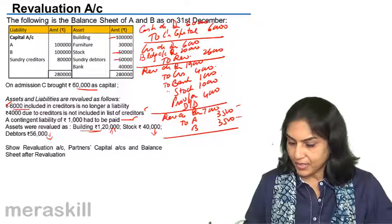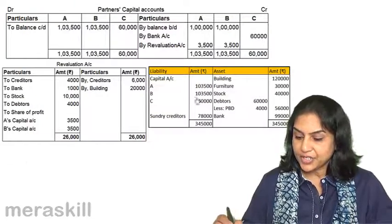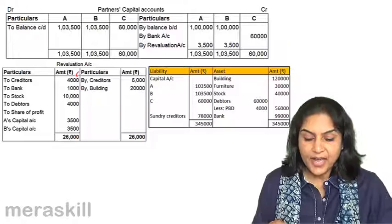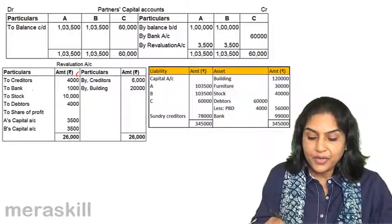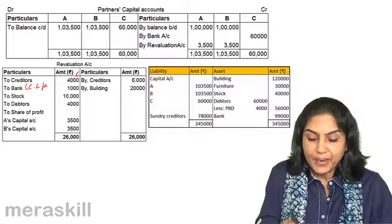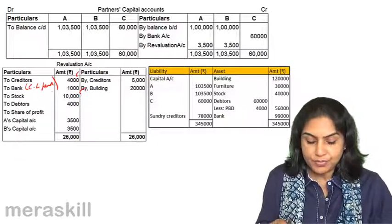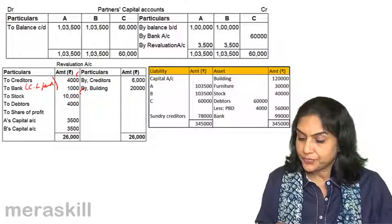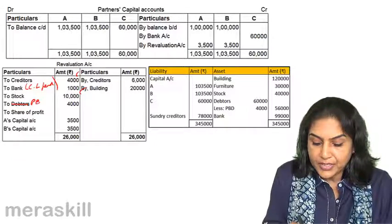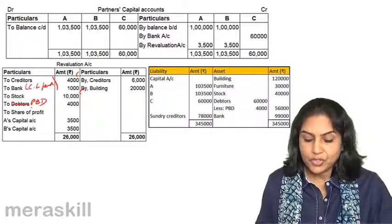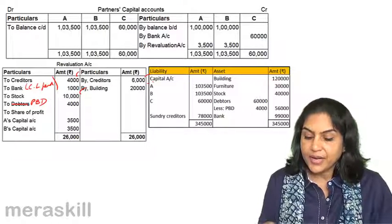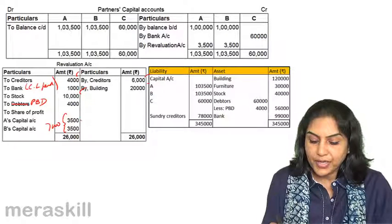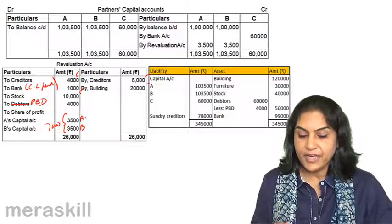Let us take a quick look at the neater presentation. Revaluation account debit to creditors — increase in liability, creditors not in the list. Contingent liability paid. Stock — we had to reduce the value by 10,000. To provision for doubtful debts, 4,000. Creditors 6,000 and building 20,000 — so we had a total gain of 7,000, distributed equally to A and B. This is the revaluation account.